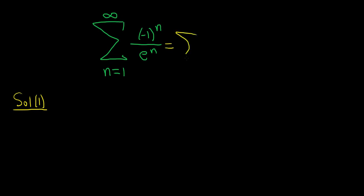If you rewrite this as the sum from 1 to infinity of (-1)^n times 1/e^n, you can easily identify the non-alternating part. It's this part here, without the (-1)^n. That's the first thing you typically do.